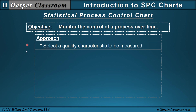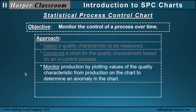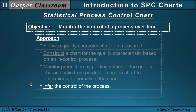The approach we will take is: first, select a quality characteristic to be measured; then construct a chart for the quality characteristic based on an in-control process; then monitor the production by plotting the values of the quality characteristic from the production on the chart to determine anomaly in the chart. An anomaly would be anything that deviates from the control chart when the process was in control. Using the anomaly, we will infer the control of a process and then improve the process.